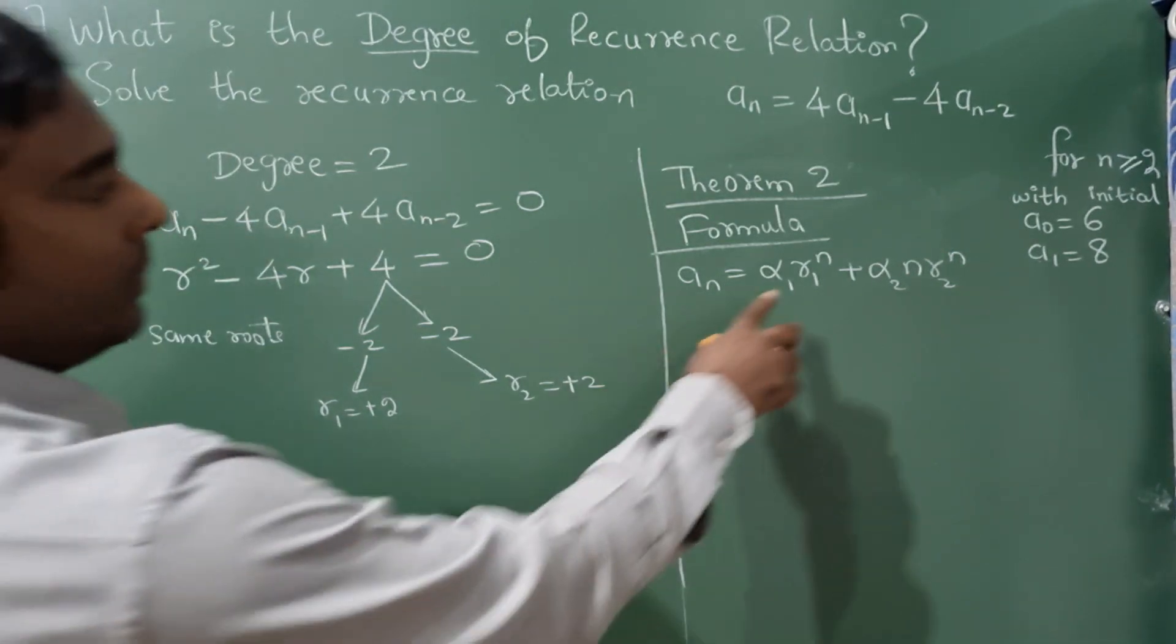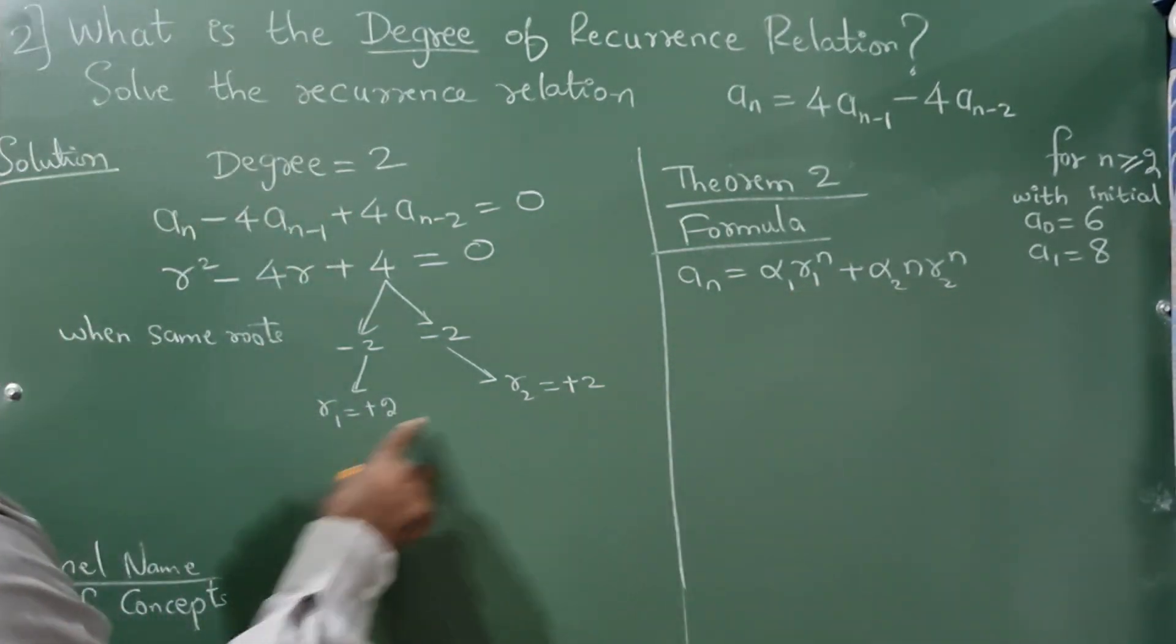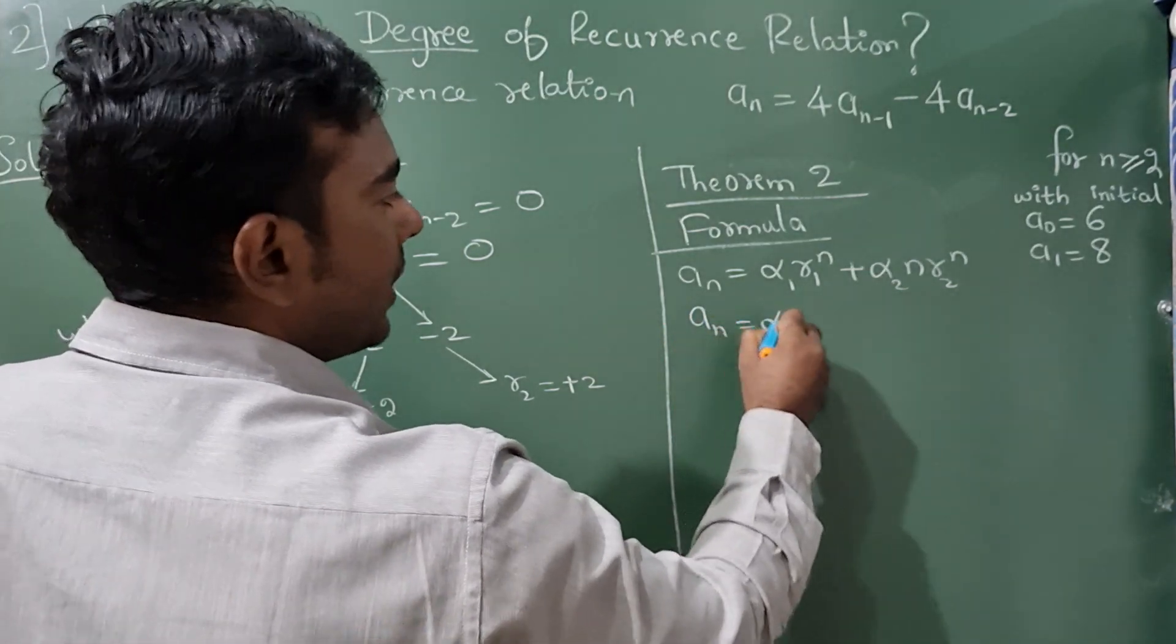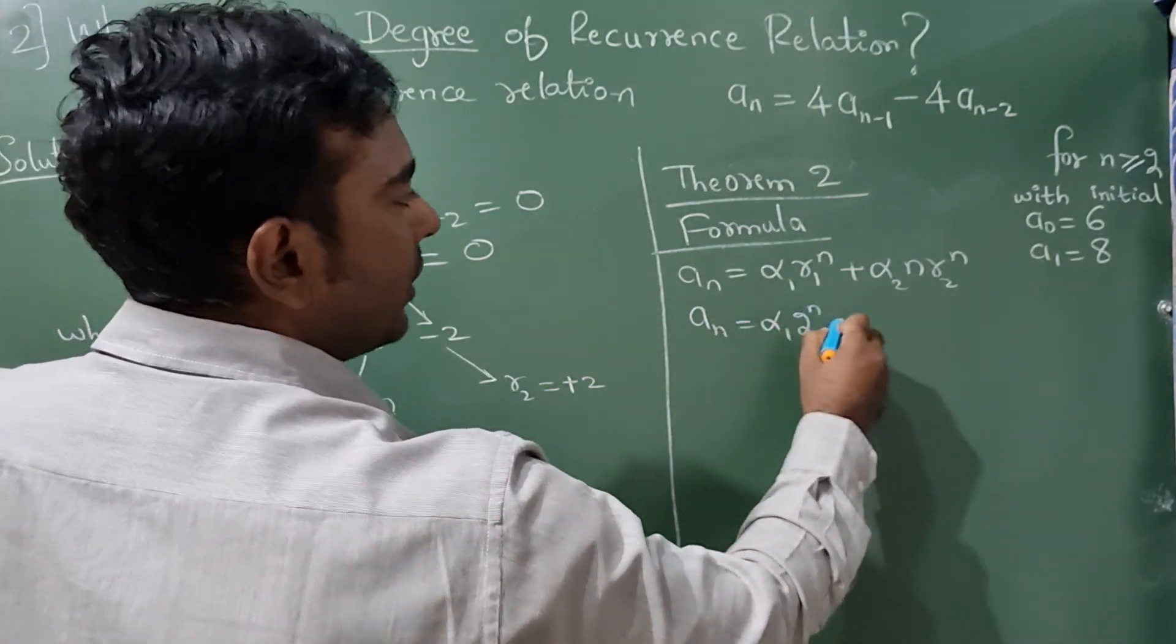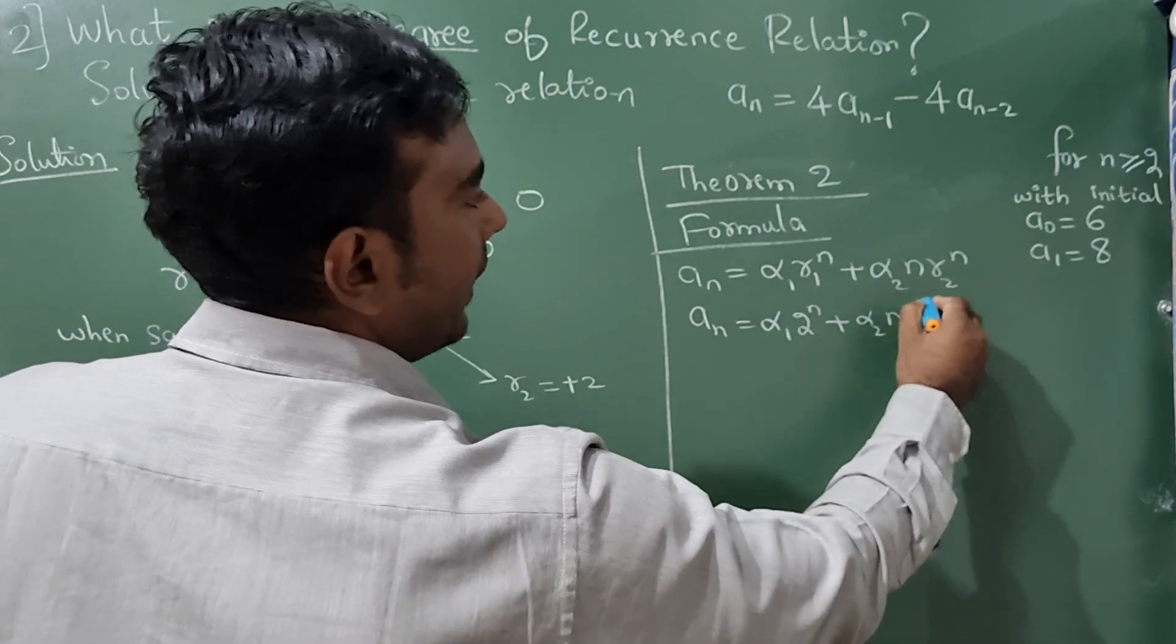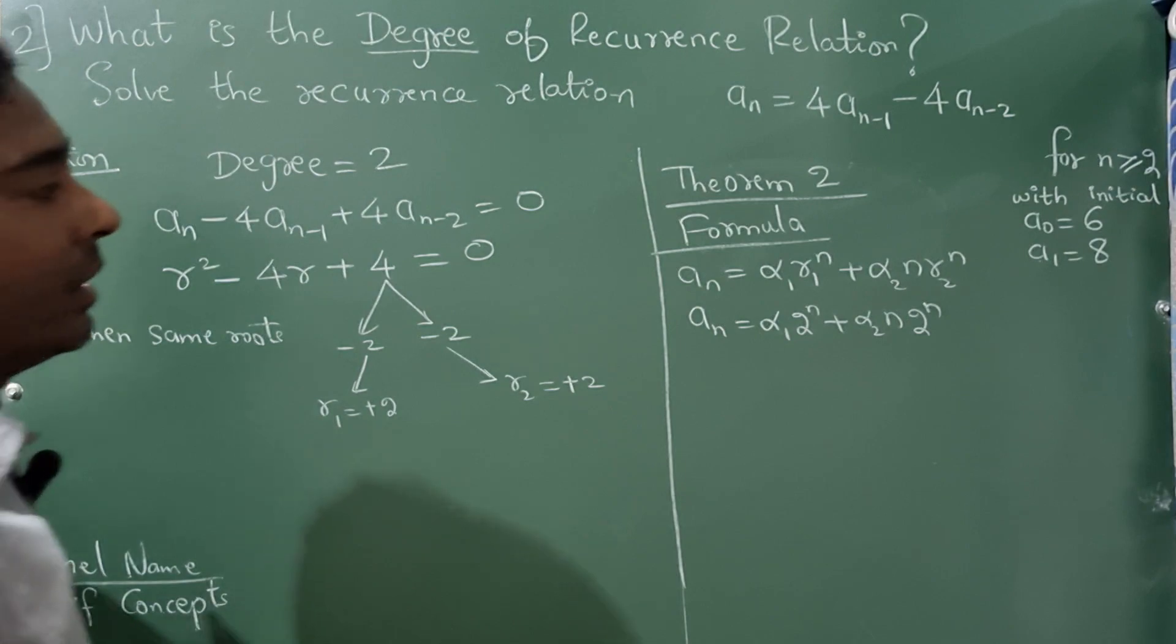Now in place of r₁, r₂ substitute these values. So aₙ = α₁(2)ⁿ + α₂n(2)ⁿ.